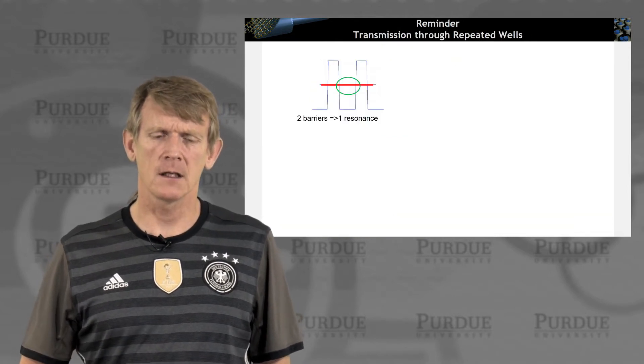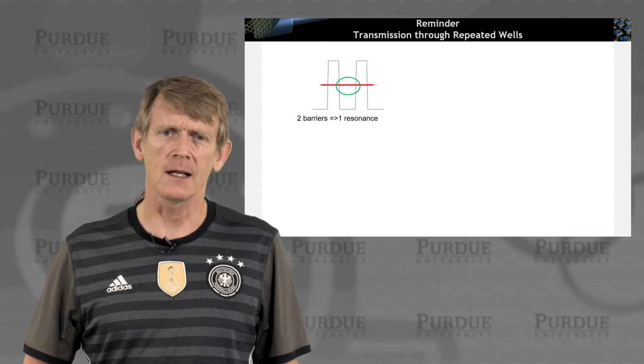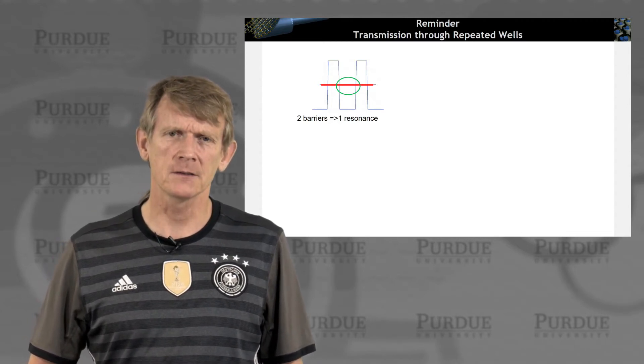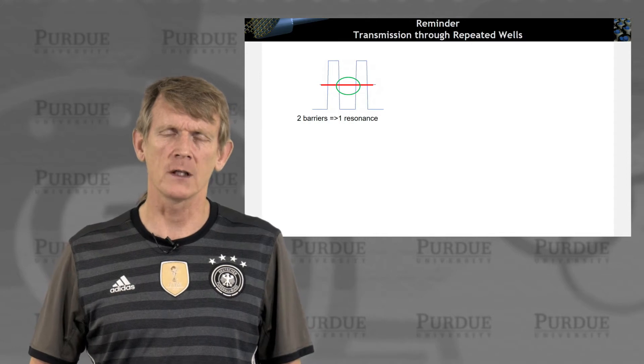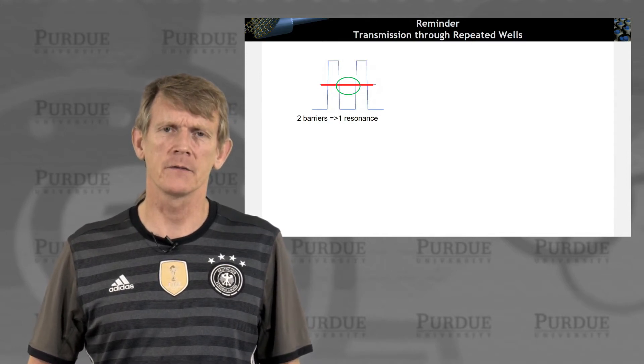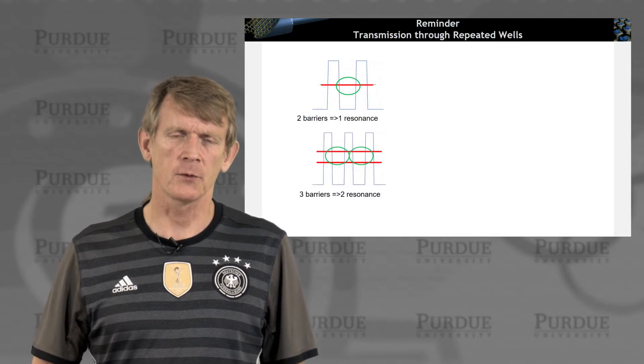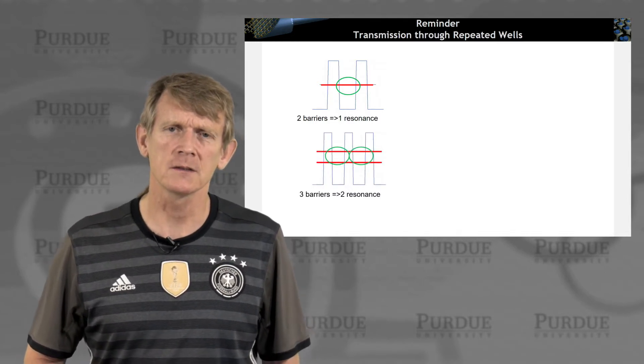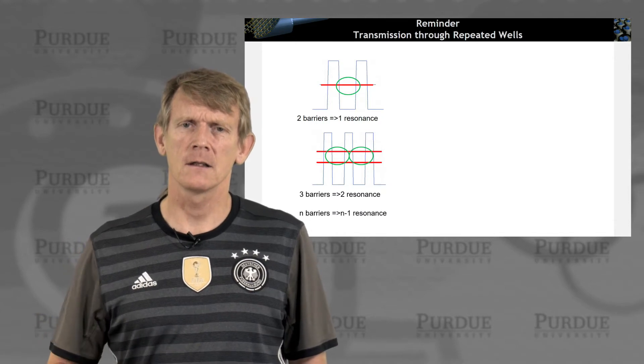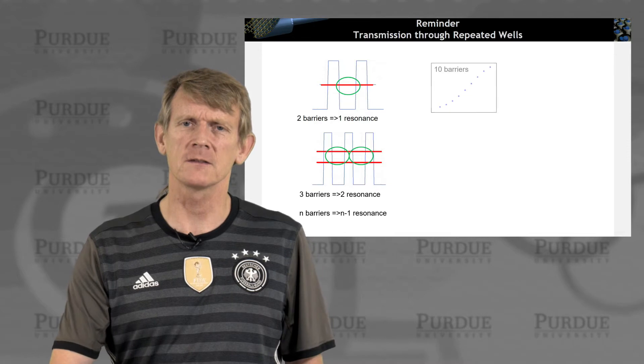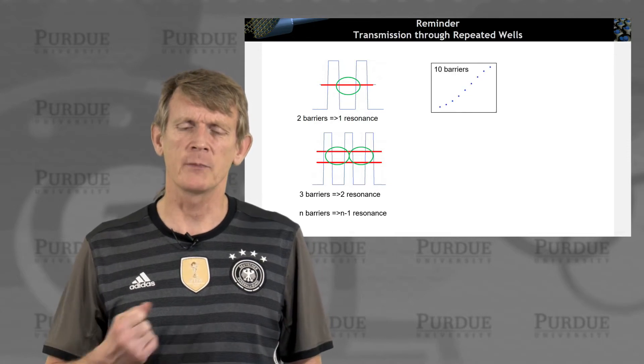So let's look at what we've seen in the last section one more time. Two barriers, one resonance corresponding to one quantum well that is in the middle of the structure. And we had a case where we had three barriers, two resonances, and we had the case of N barriers, N minus 1 resonances, and we had these bands emerging.